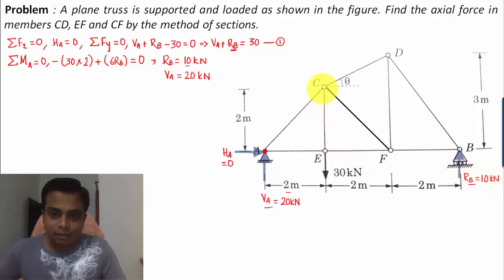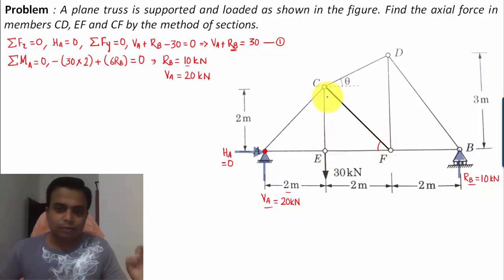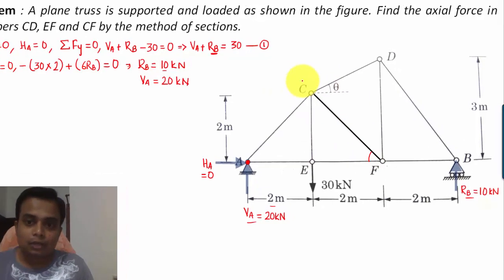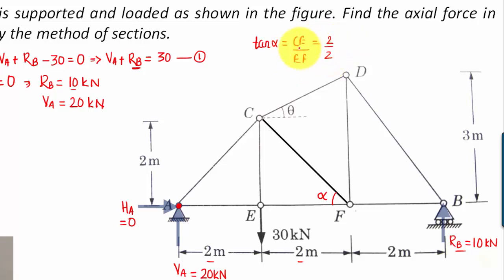Now looking carefully at the triangle, this side is 2 and this side is also 2. I'm going to find angle alpha because the forces in these members need to be resolved. Tan alpha = opposite CE / base EF = 2 / 2 = 1, so alpha = 45 degrees.